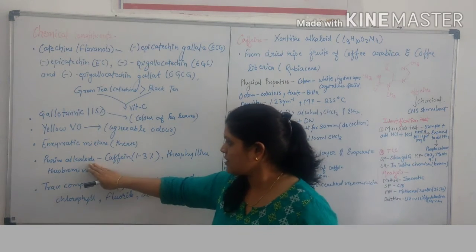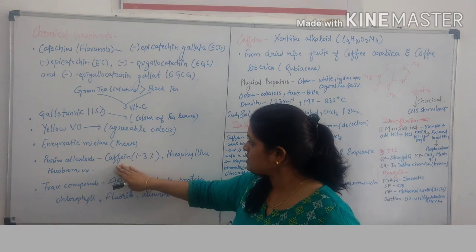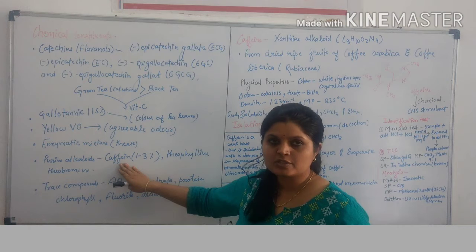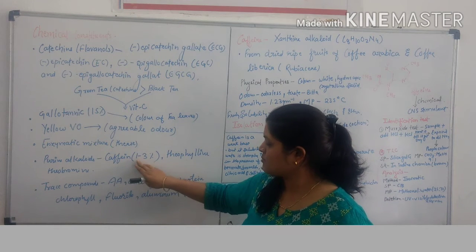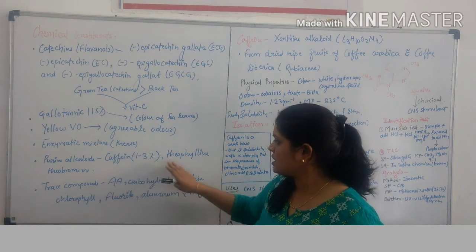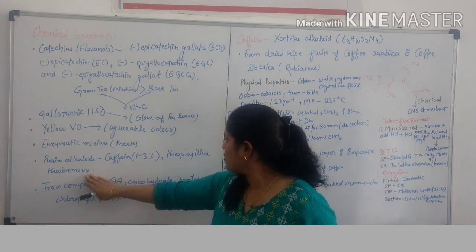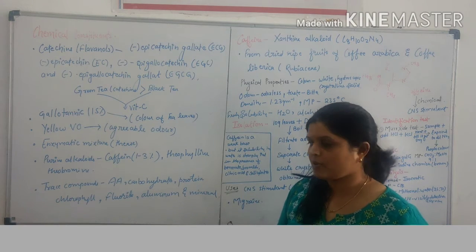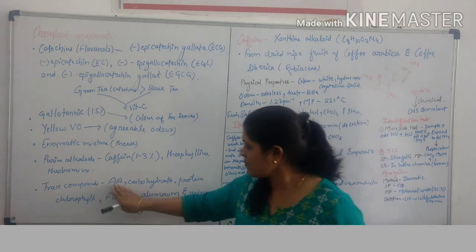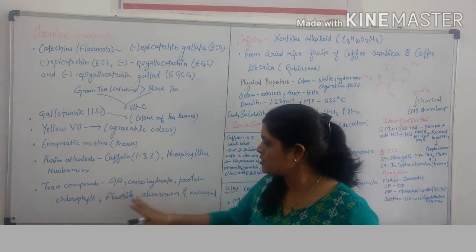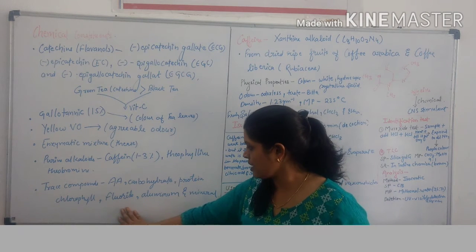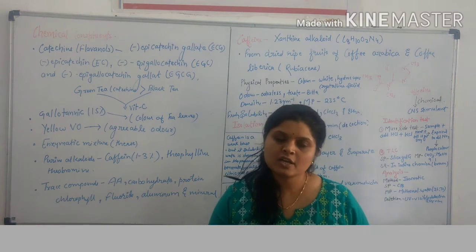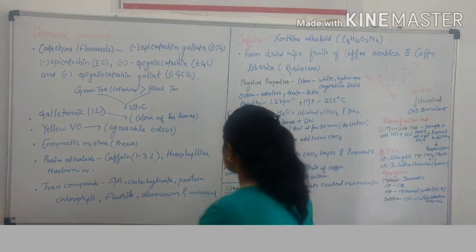Some purine alkaloids are also present. Caffeine is the chief constituent of tea present in 1 to 3%. Theobromine and theophylline are present in very less quantity. Amino acids, carbohydrates, proteins, chlorophyll, fluoride, aluminum and minerals are present in very less quantity.